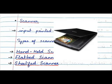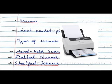The next one is the flatbed scanner. It is a type of scanner that uses a flat glass surface for scanning documents. It looks like a photostat machine. Next one is the sheet-fed scanner. It is a type of scanner that allows multiple papers to be scanned at a time. The stack of papers is kept on top and the scanner automatically scans the pages one by one. It is widely used in offices to scan documents.